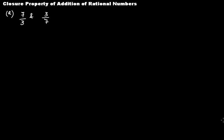In this video tutorial we'll discuss whether rational numbers are closed under addition or not. To do that, we have taken here two rational numbers 7/3 and 3/7. Now if we add these two rational numbers, then this is 7/3 plus 3/7.